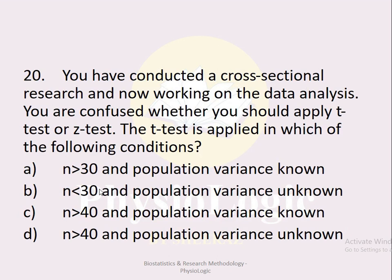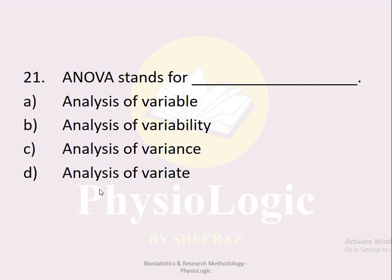MCQ number twenty: You have conducted a cross-sectional research and are deciding between a t-test and a z-test. The t-test is applied in which condition? Option a sample size more than 30 and population variance known, option b sample size less than 30 and population variance unknown, option c n more than 40 and variance known, option d n more than 40 and variance unknown. The correct option is option b — sample size less than 30 and population variance unknown.